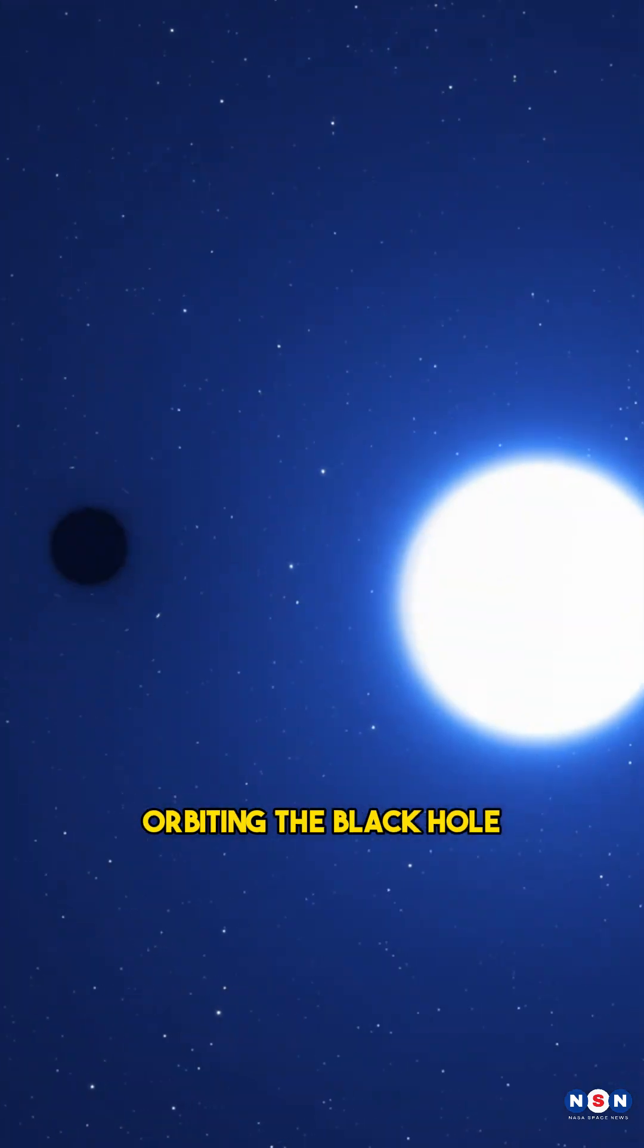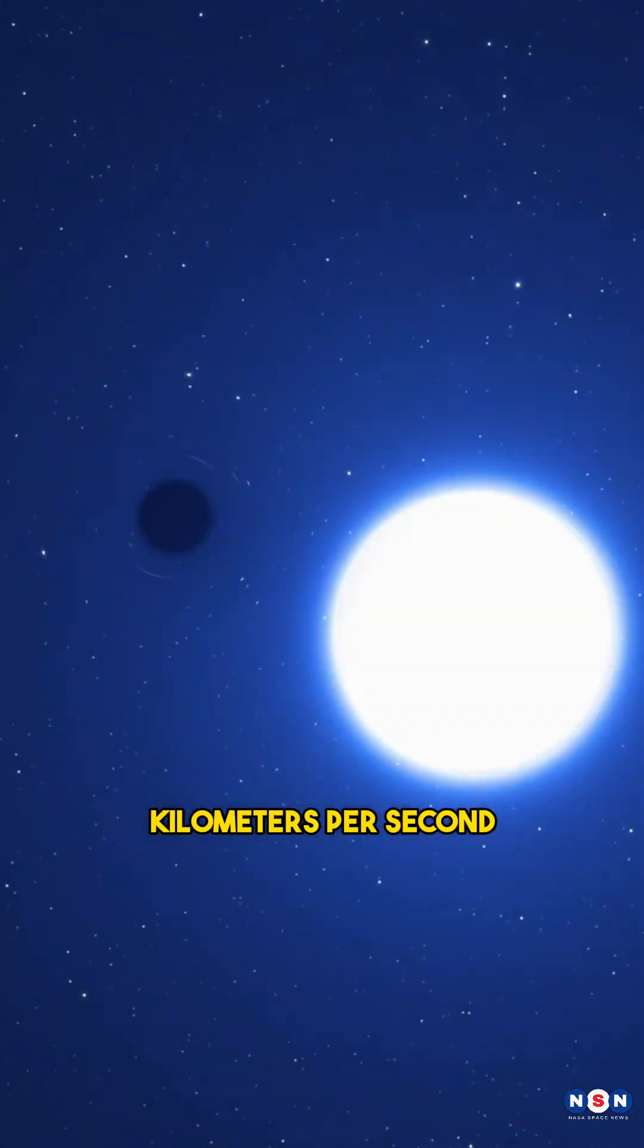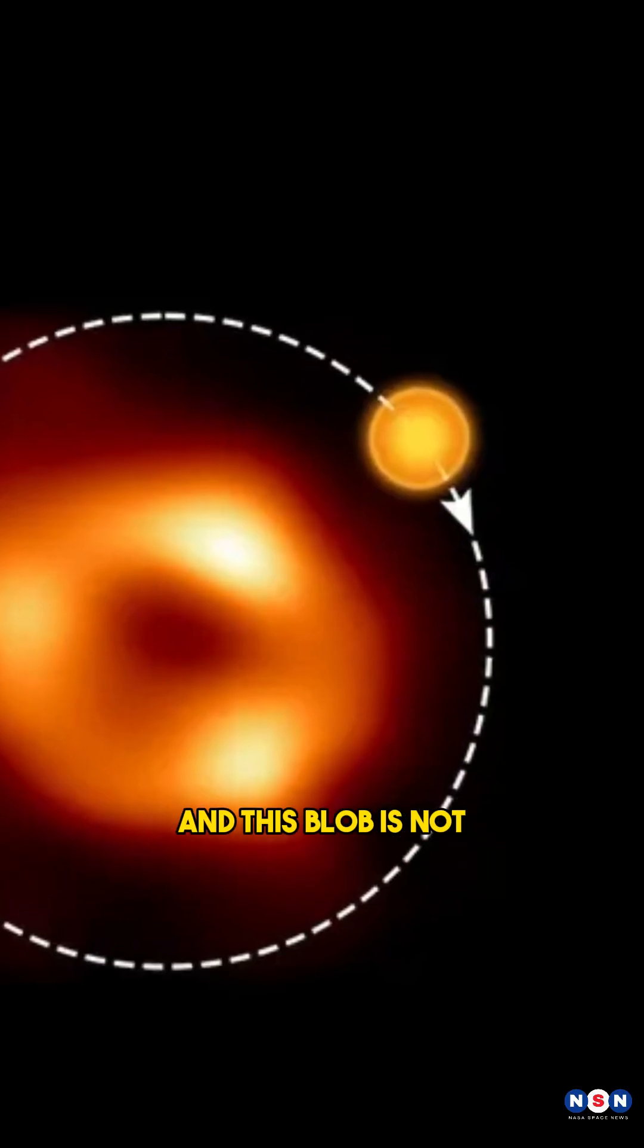A blob of gas that is orbiting the black hole at 30% of the speed of light, which is about 90,000 kilometers per second. And this blob is not just a random blob.